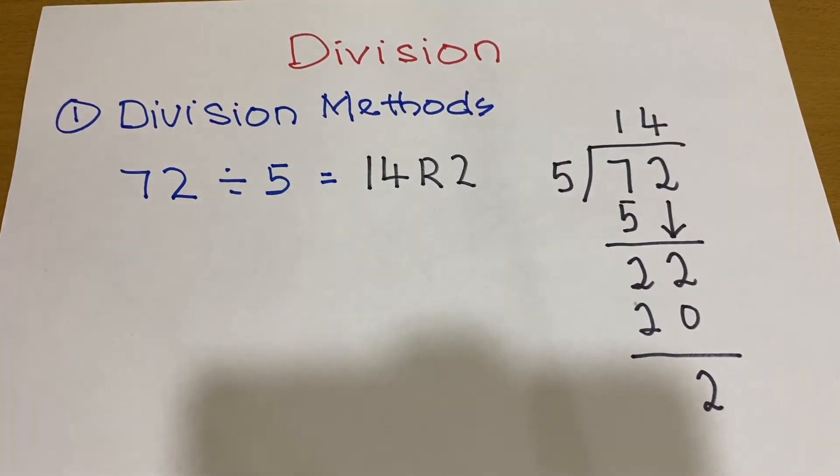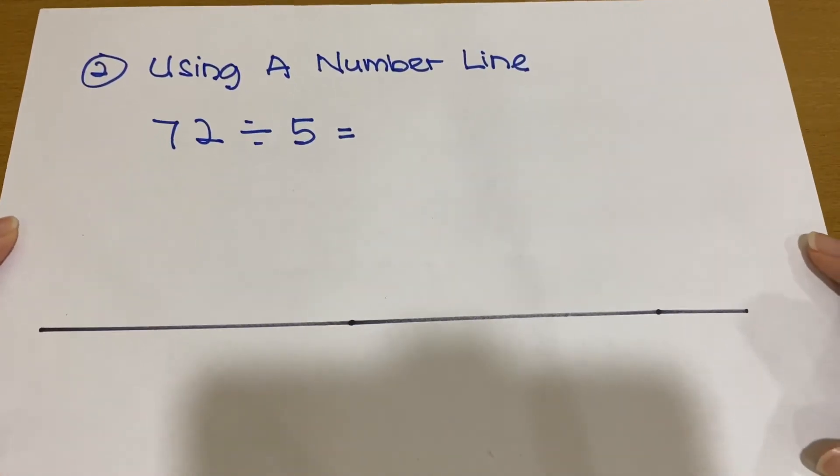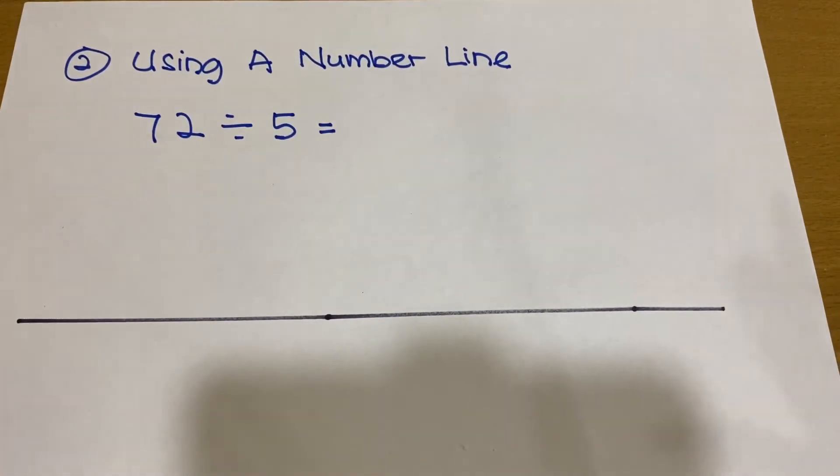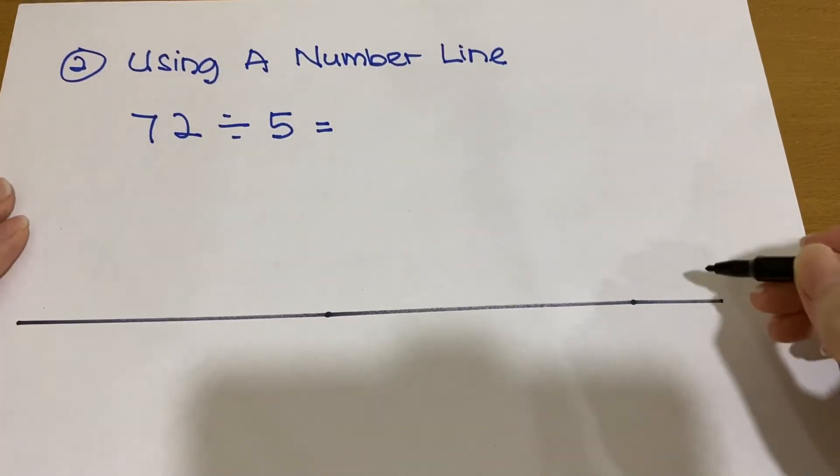Now I will introduce the second method. The second method is we do division using a number line. The same question is 72 divided by 5. We have the number line here. We put the 72 here.